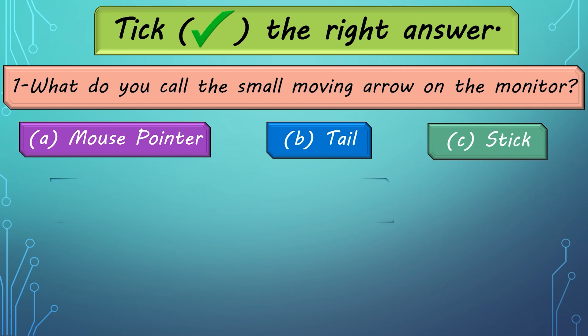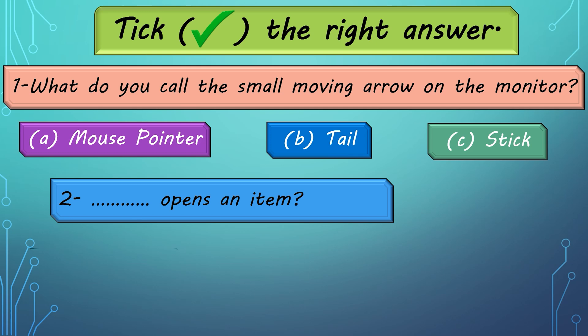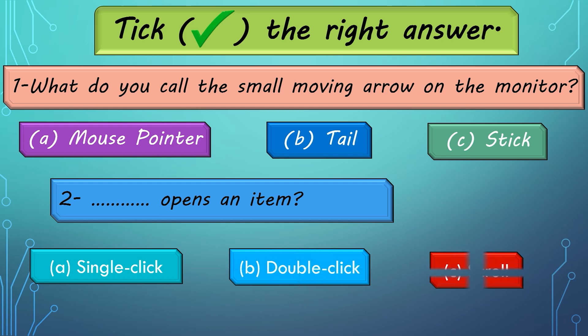Number 2: Dash opens an item. Options are: A. Single Click. B. Double Click. C. Scroll.